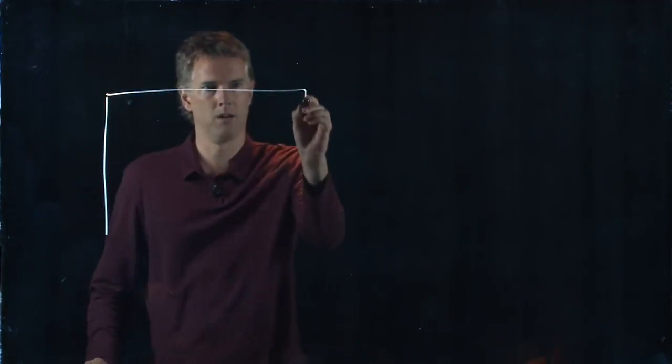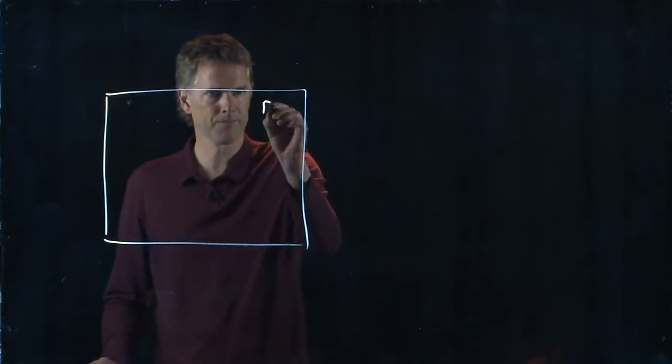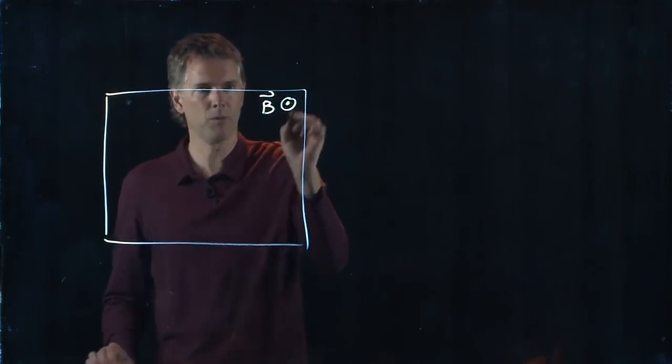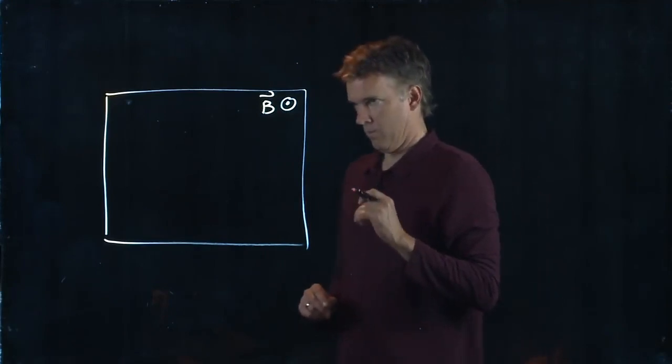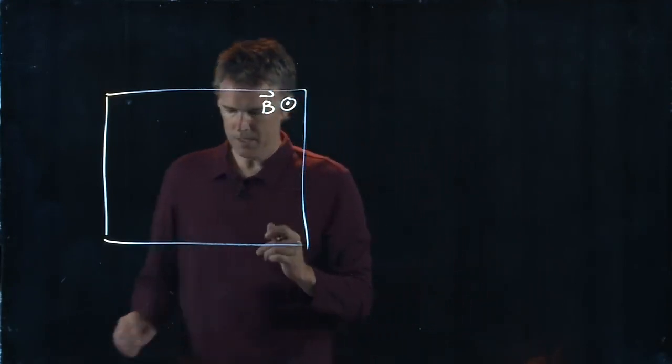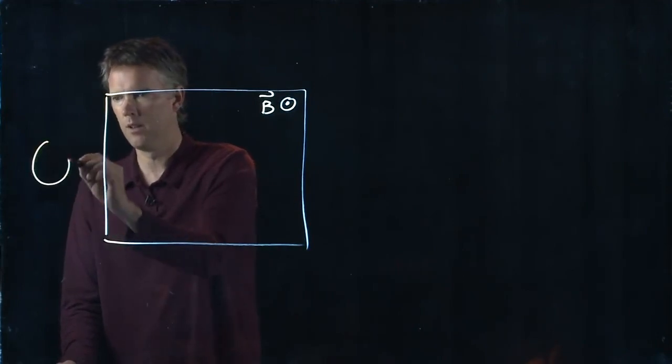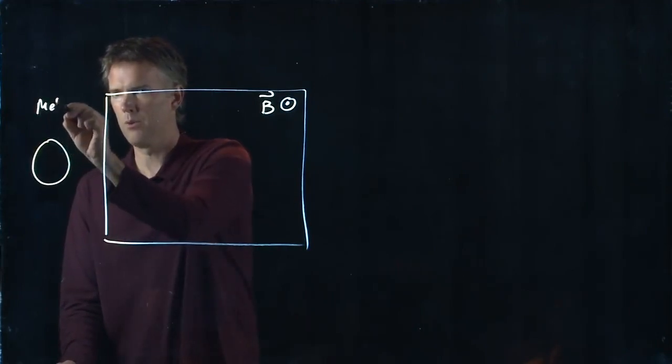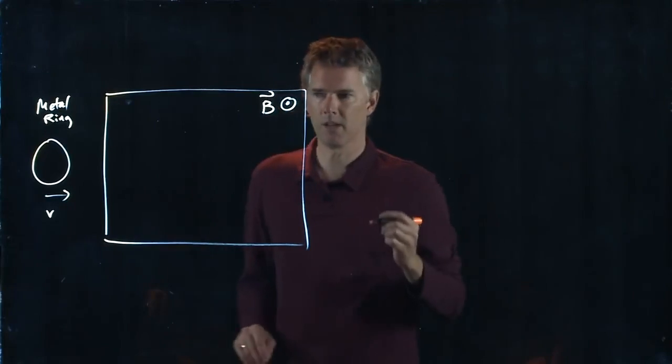So let's do the following. We're going to draw a region of magnetic field here, B, where it's everywhere pointing out of the page. When it's pointing out of the screen and we take a ring and we start to move it through, something's going to happen.